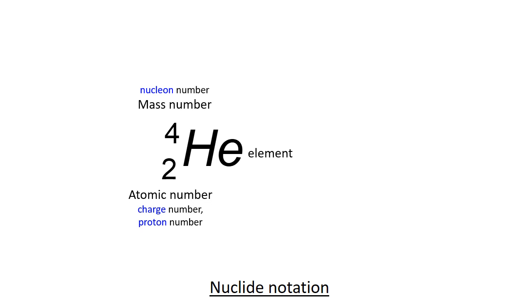And then there is the mass number, otherwise known as the nucleon number. It gives the approximate mass of the nucleus. So the mass here is approximately four times the mass of a proton.